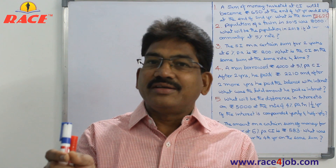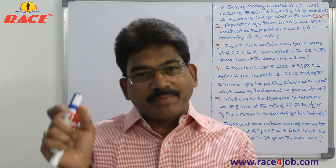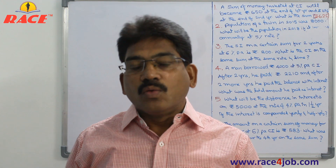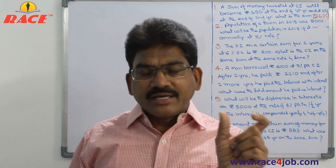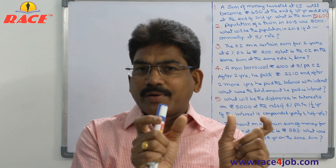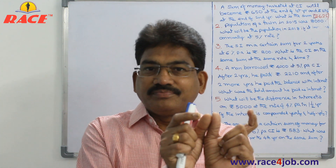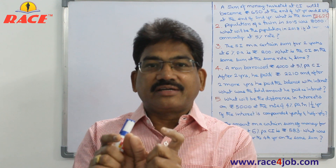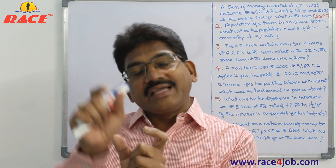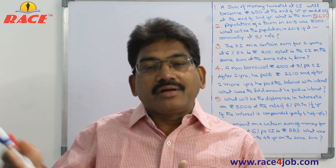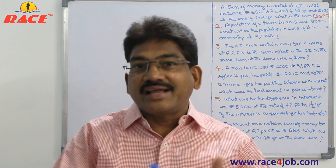The increment is added to the principal, and on that we again calculate the next amount. Similarly in population, the beginning population grows at some rate, we find the increment and add it to get the next year's population. Then again calculate increment for the second year, add it for the third year — just like compound interest.